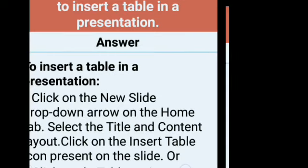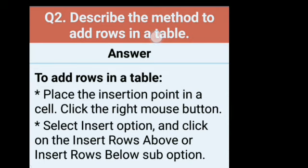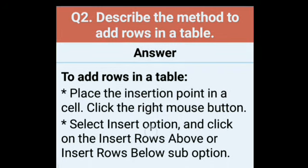Second question: describe the method to add rows in a table. Table में rows add करने के लिए we have to place the insertion point in a cell — जिस cell के ऊपर या नीचे row लानी है, वहाँ cursor ले जाएंगे. Then click the right mouse button. Select insert option and click on insert rows above या insert rows below sub-option. अगर ऊपर rows चाहिए तो insert rows above, और नीचे चाहिए तो insert rows below. So this way we can add rows in a table.